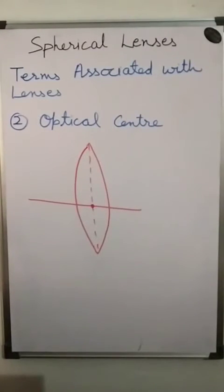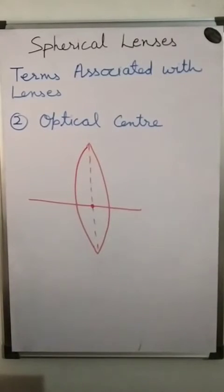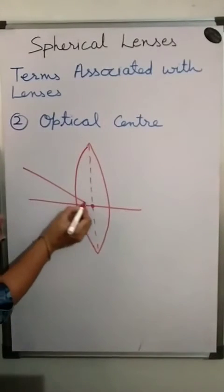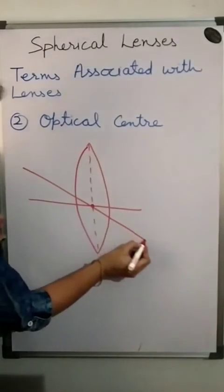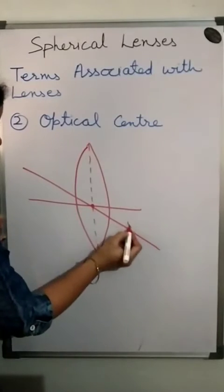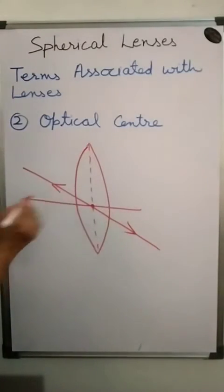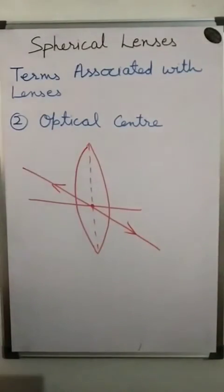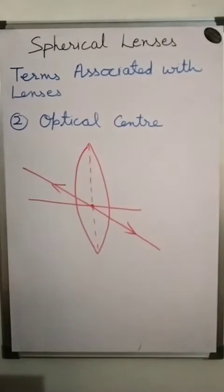The optical center is also the geometrical center of the lens. If a line passes through it, the ray moves undeviated — there is no deviation. So this point is called the optical center.